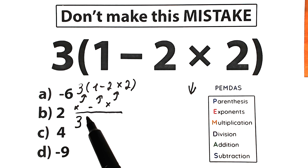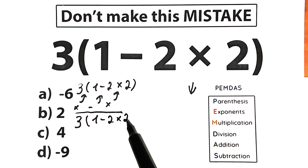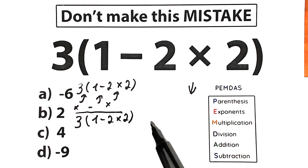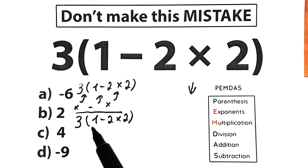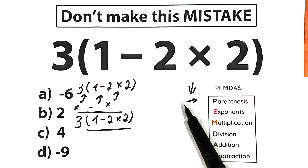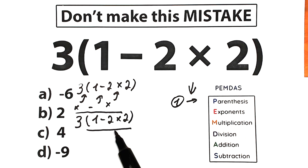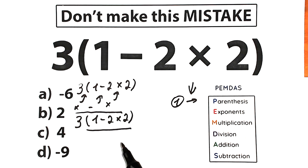So let's solve our challenge according to PEMDAS. Our challenge is 3 times, in parentheses, 1 minus 2 times 2. First, we scan our challenge and we find parentheses — that is our first step. Inside the parentheses we have multiplication and subtraction. What should we do first — subtract or multiply?